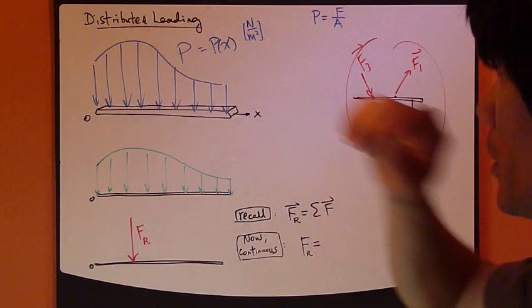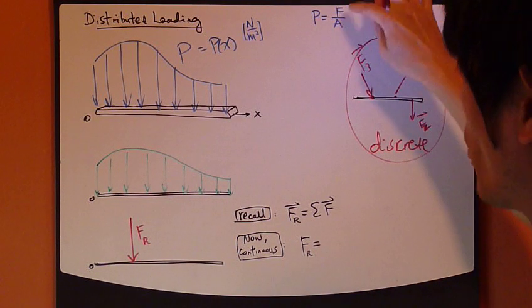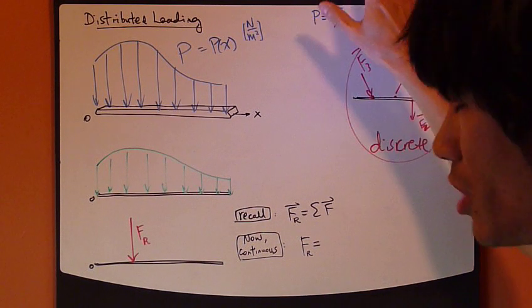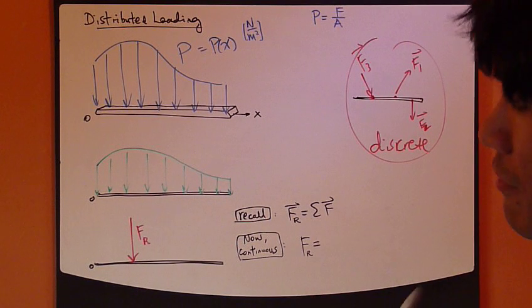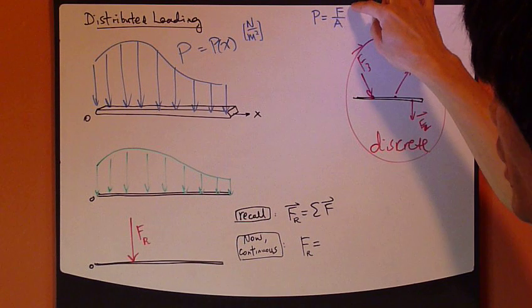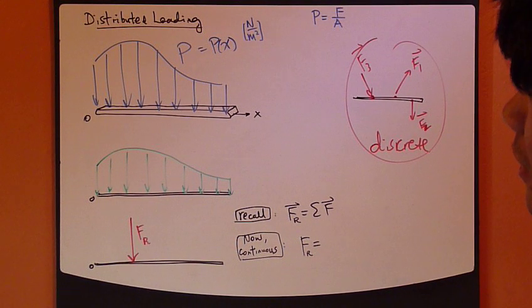Okay, so pressure has a general definition of force per unit area. This is just general definition. So the force, it's constant force applied at a certain area. So you take this ratio, it gives you pressure.